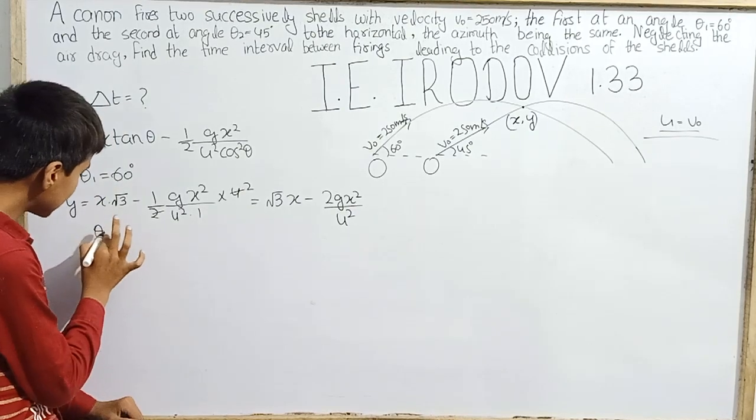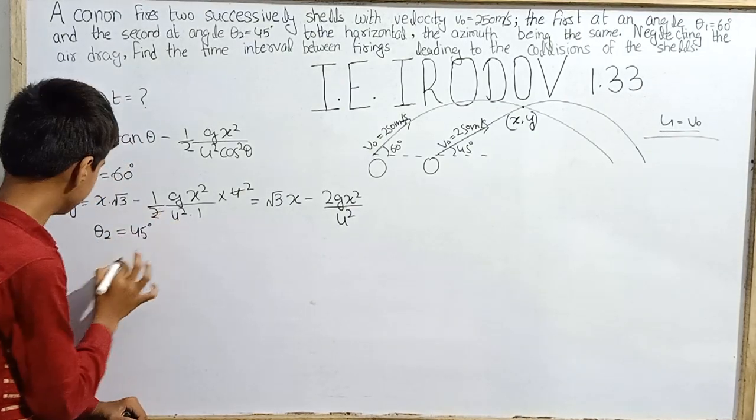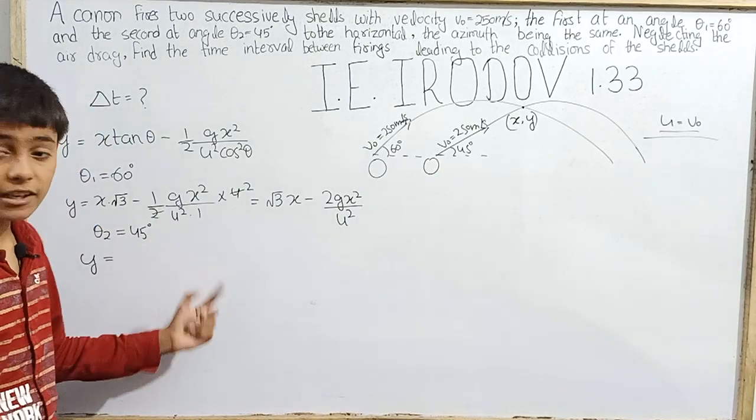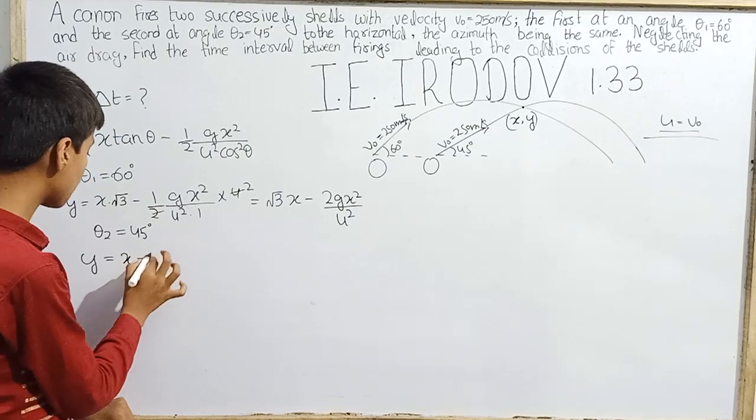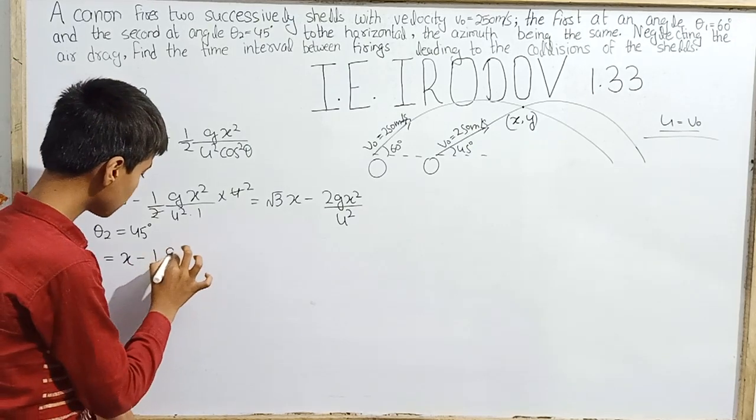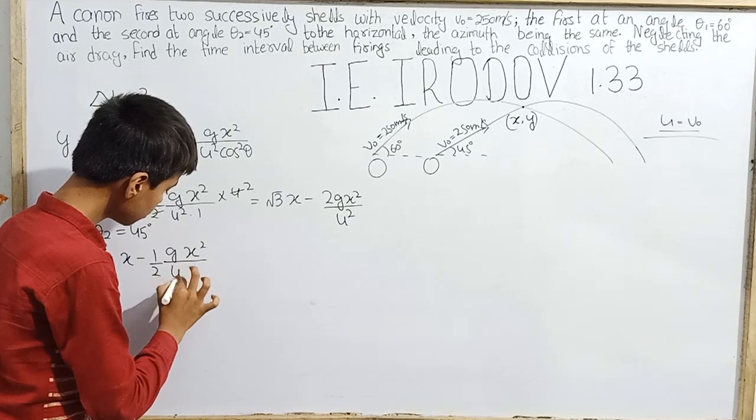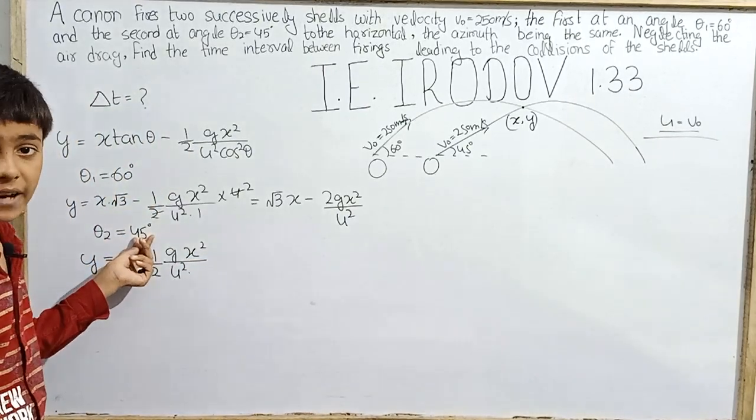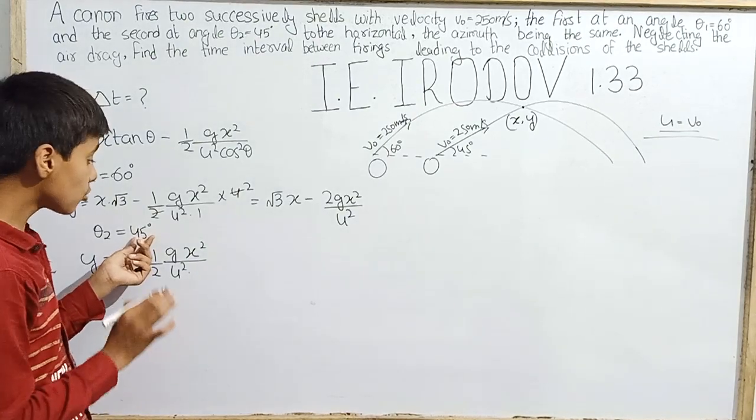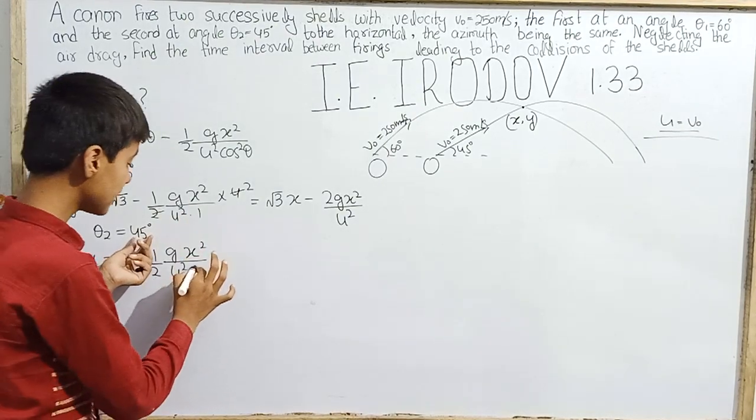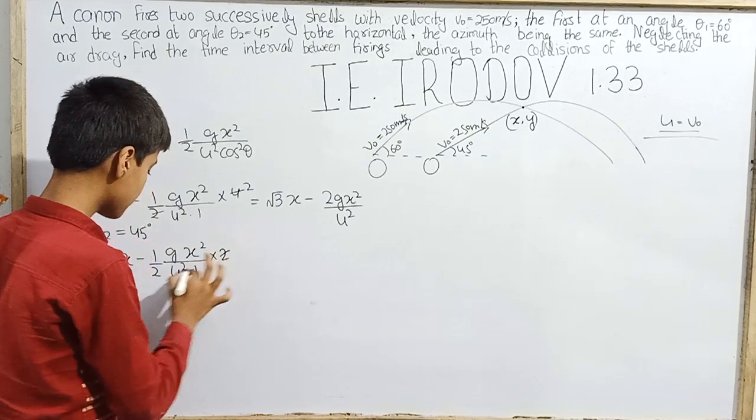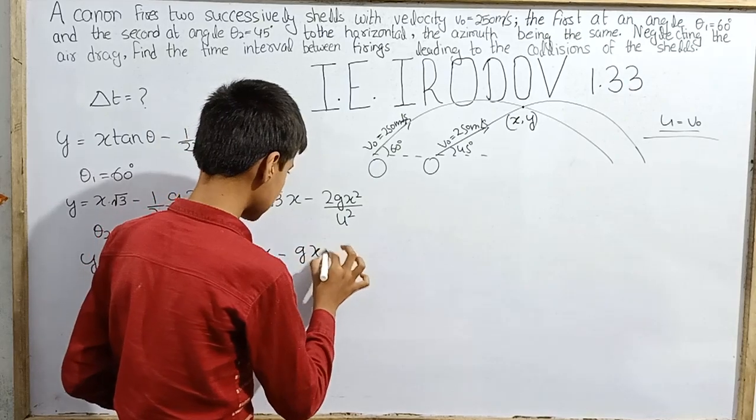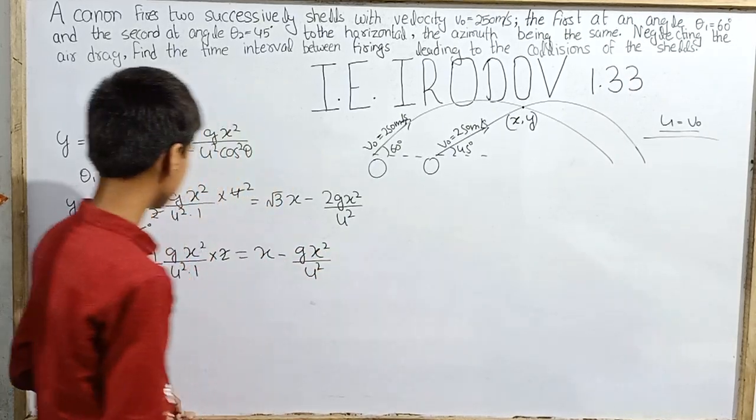For θ₂ equals 45 degrees: y equals x times tan 45 degrees which is 1, meaning x minus half g x squared over u squared. Now cos 45 degrees is 1 by root 2, so cos squared 45 degrees is 1 by 2. After canceling, we get: y equals x minus g x squared over u squared.